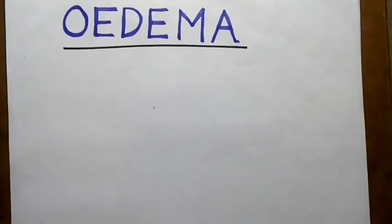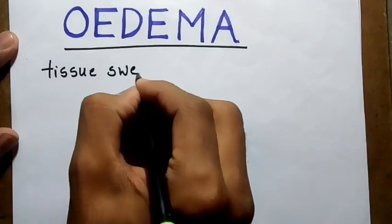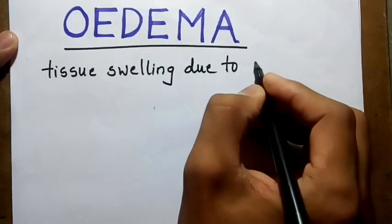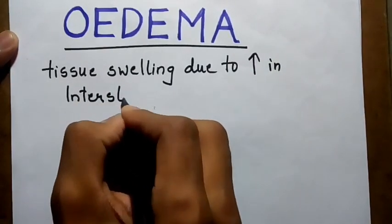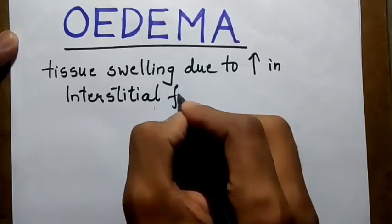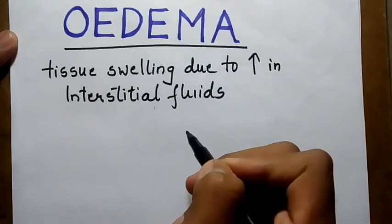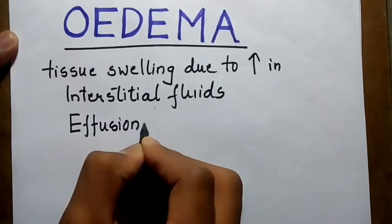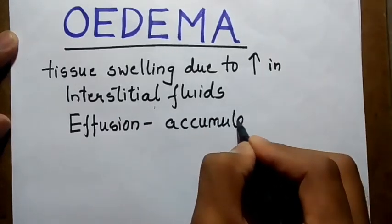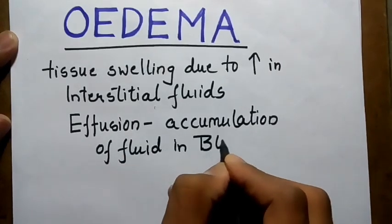Edema is tissue swelling due to an increase in interstitial fluids. It must be differentiated from effusion, which is the accumulation of fluid in body cavities.